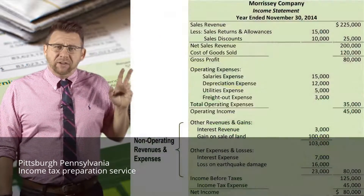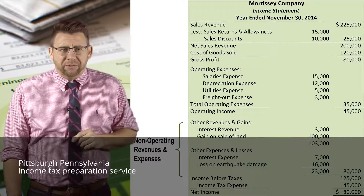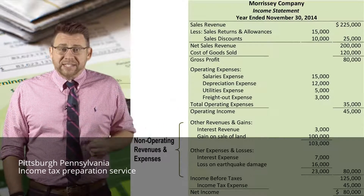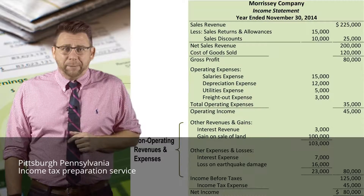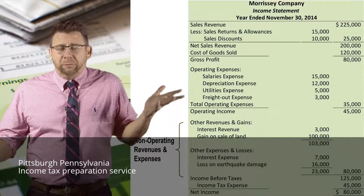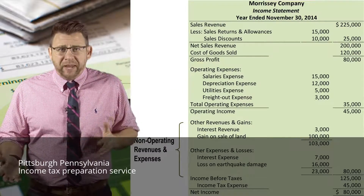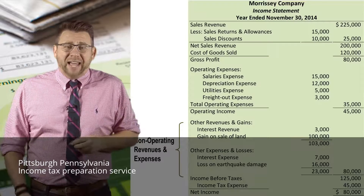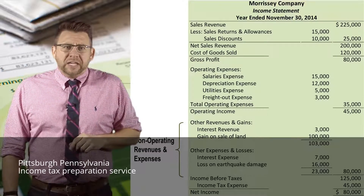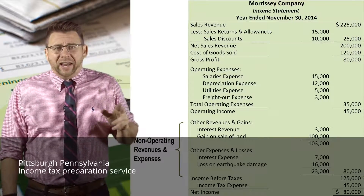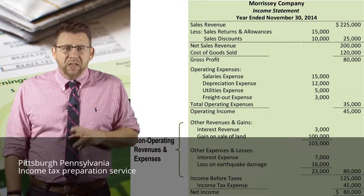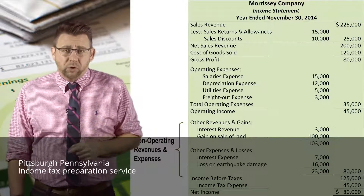The next section of the income statement reports non-operating revenues and expenses. These items are either one-time amounts — like gain on sale of land or loss from earthquake damage — or items not part of central operations, like interest revenue earned by making a loan, or interest expense incurred by financing assets with debt. This section is sometimes known as the other section. Other revenues and gains are added to operating income, and other expenses and losses are deducted, giving us a new subtotal called income before taxes.